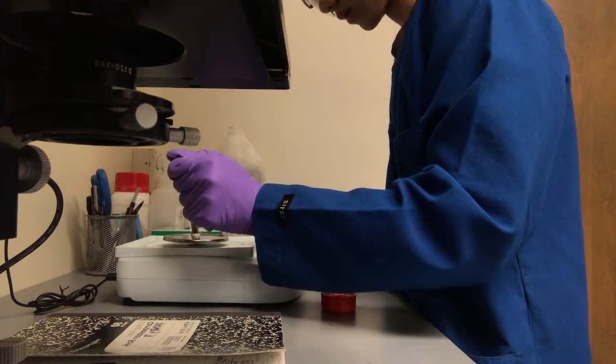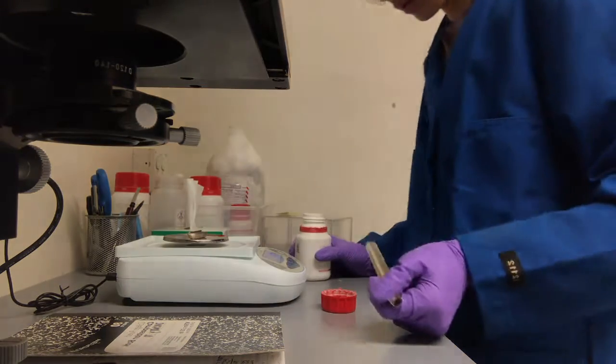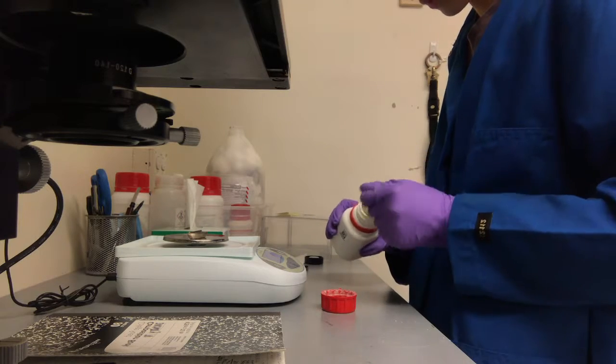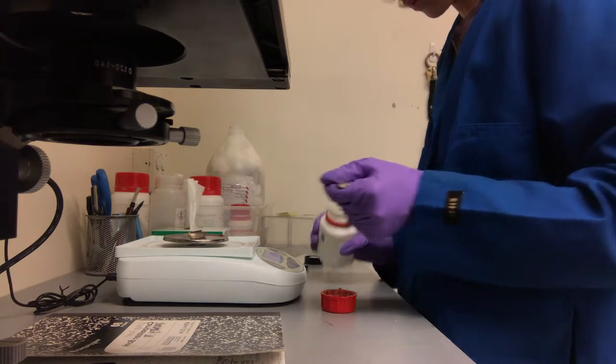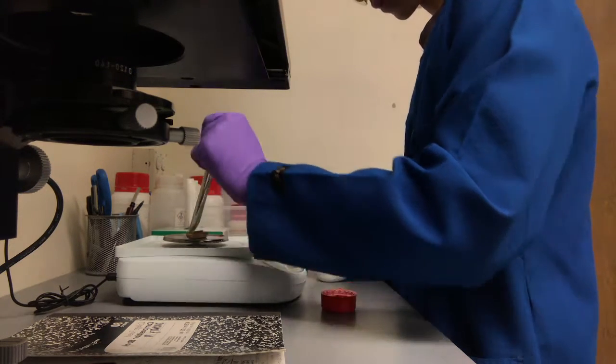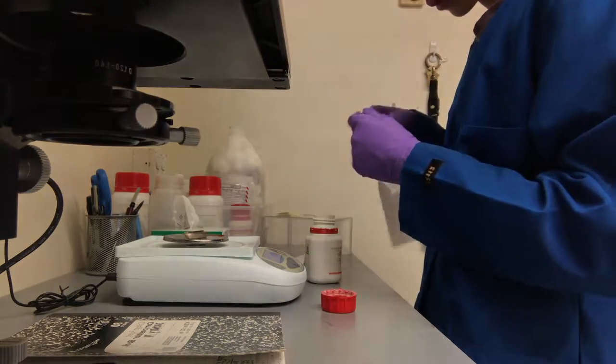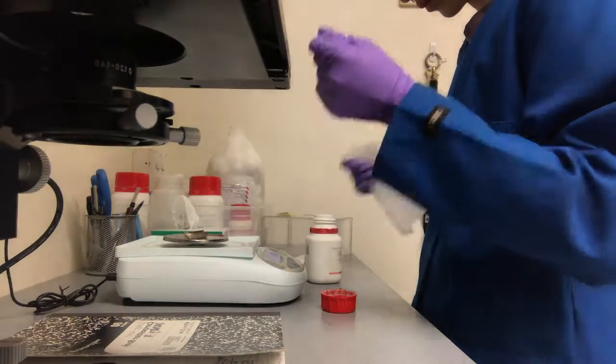Next I will start off by measuring out specific weights in grams for the two chemicals, sulfur and molybdenum trioxide. Many undergraduate or graduate students have their own set of weights they use depending on the growth. So I will start off by weighing out the desired sulfur weight for my growth.